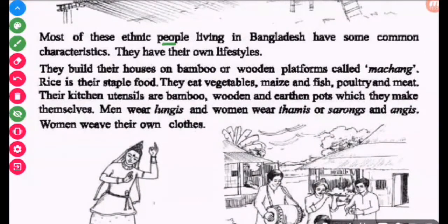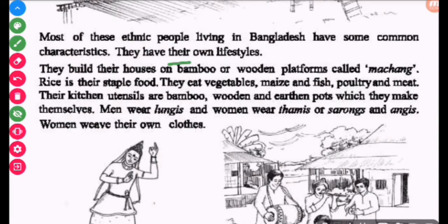Most of these ethnic people living in Bangladesh have some common characteristics. They have their own lifestyles. They build their houses on bamboo and wooden platforms. Rice is their staple food. They also eat vegetables, maize, and fish.